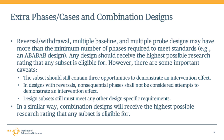When reviewing a subset of a design, there are additional details to consider. The subset of the design must contain three opportunities to demonstrate an intervention effect. In designs with reversals, non-sequential phases shall not be considered attempts to demonstrate an intervention effect. Design subsets must also still meet any other design-specific requirements, such as multiple baseline design special requirements or the limited risk of bias step of the review. Combination designs — that is, designs which combine features of two designs — will also receive the highest possible rating that any subset is eligible for.